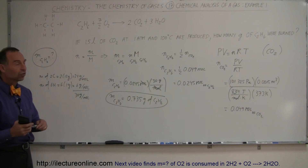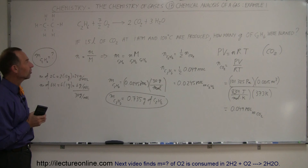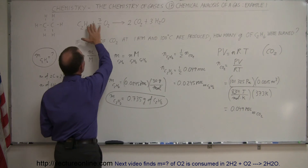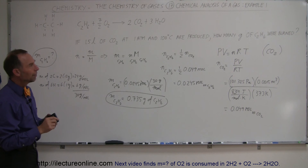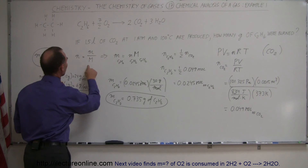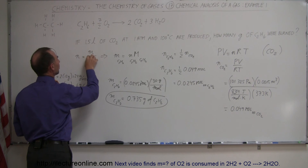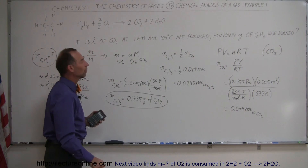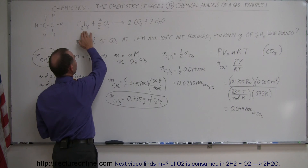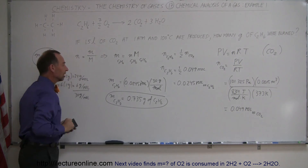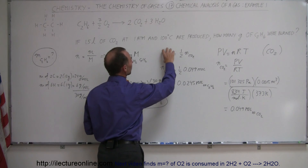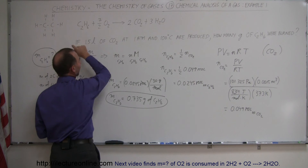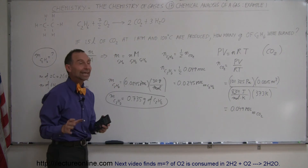Notice the strategy. We were told that one of the products was one and a half liters of gas at one atmosphere and 100 degrees centigrade, produced by burning ethane and oxygen. They wanted to know how many grams of ethane was used. We first noted that mass equals number of moles times molar mass. We then had to find the number of moles of ethane and the molar mass. Next, we found the ratio: for every two moles of CO2, there is one mole of ethane, so the number of moles of ethane is half the number of moles of carbon dioxide.